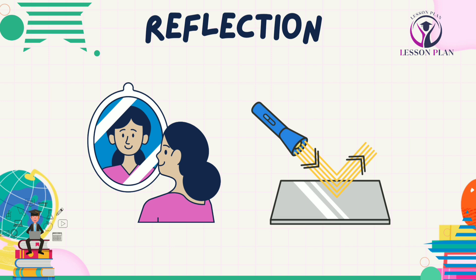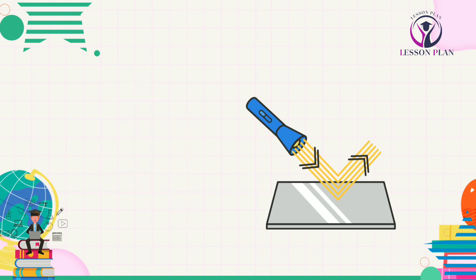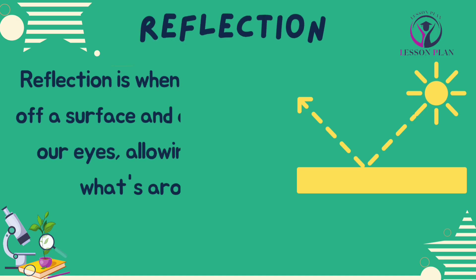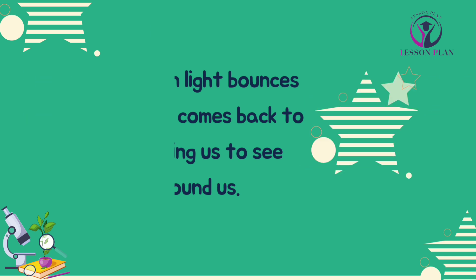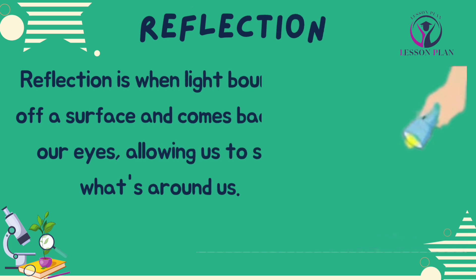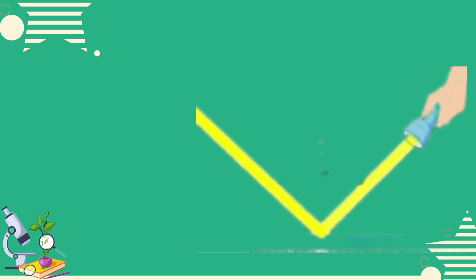Reflection is another way that light interacts with the world around us. You must have looked at your reflection in a mirror — that's an example of reflection. Reflection is when light bounces off a surface and comes back to our eyes, allowing us to see what's around us.